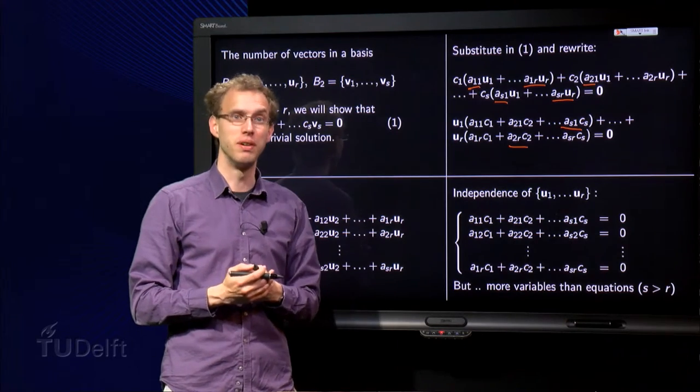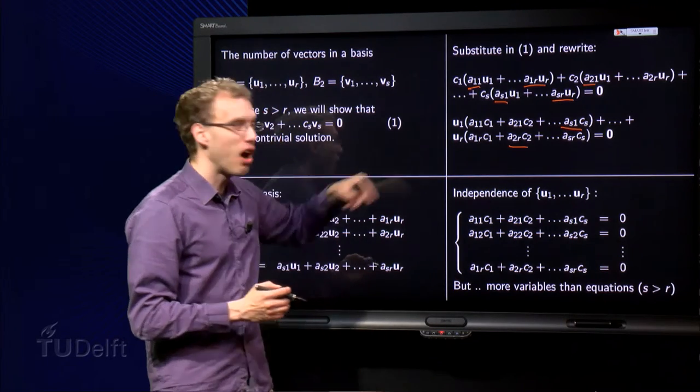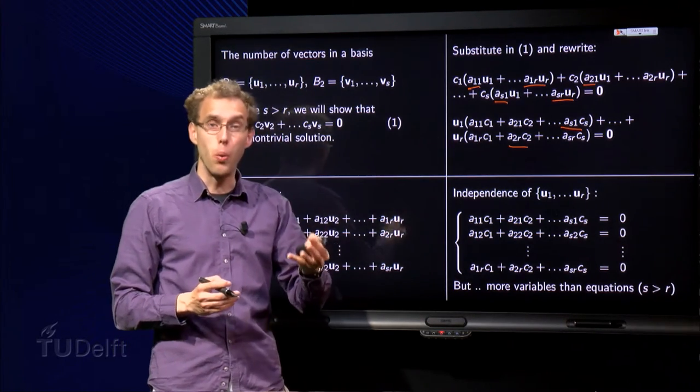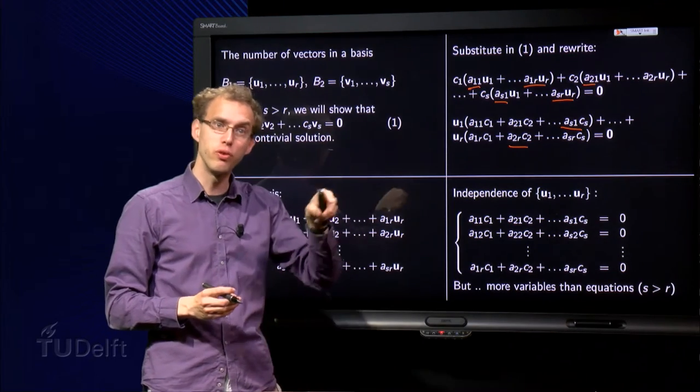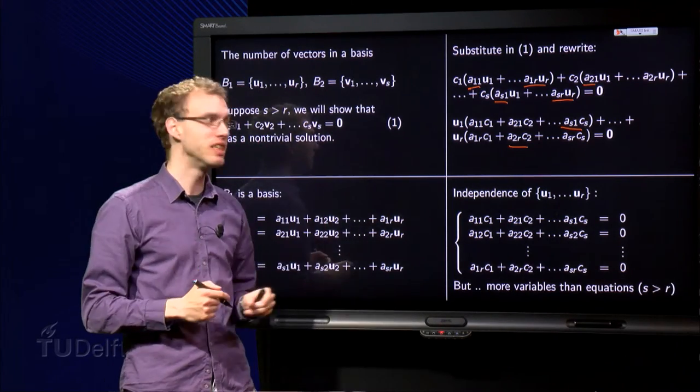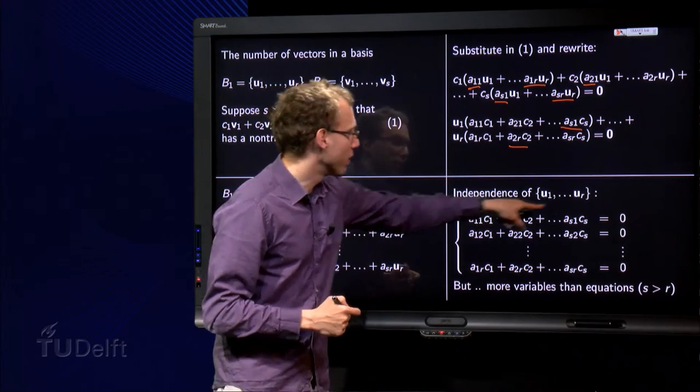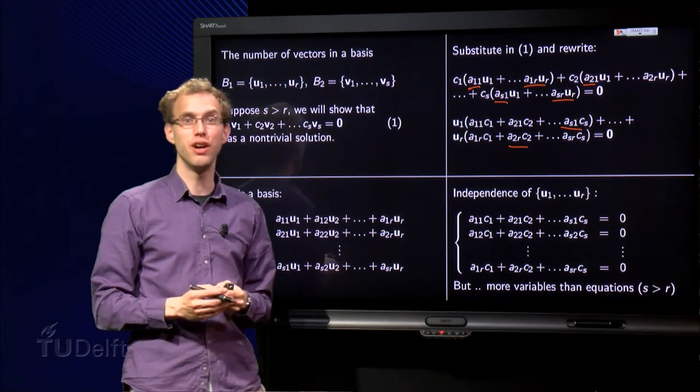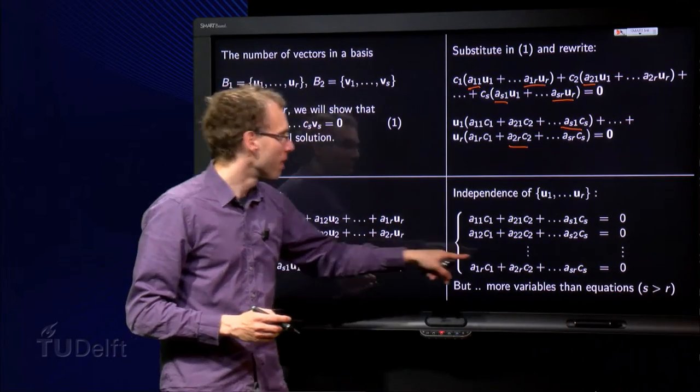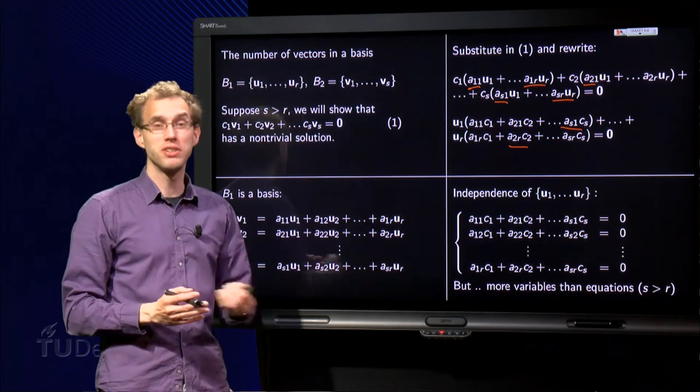And that leads to a linear system. But now we have r equations, we have r weights in front of all of the uᵣ, so r equations, and we have c₁ up to cₛ, we have s unknowns. But now we have more variables than equations.